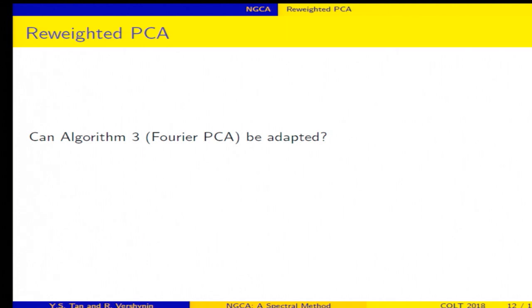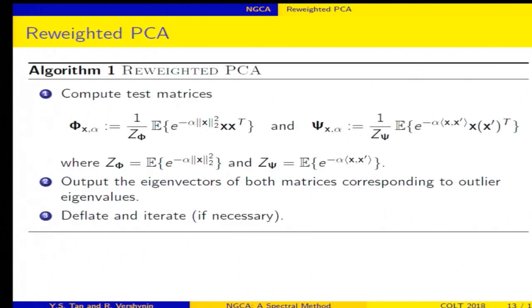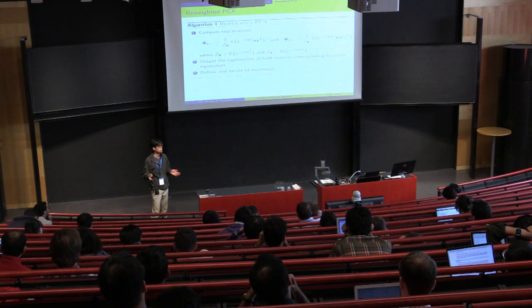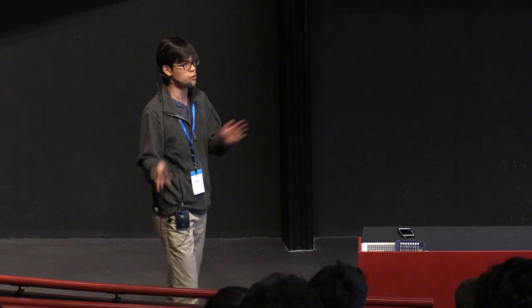We can ask the question whether the third algorithm, reweighted PCA, can be adapted. Okay, so the naive adaptation doesn't work, but we can actually change the weights to get something that does work. Alright, so here's the algorithm. Okay, so we first consider the following two test matrices. So here we have the covariance of X, except that we modulate the distribution by multiplying it by this quantity, e to the minus alpha times the norm of X squared. And then our second matrix is a bit more complicated. We take X and an independent copy X prime. We form the outer product. And again, we modulate the distribution with this quantity, e to the minus alpha X dot X prime. Okay, and we have self-normalizing quantities. So we consider these two test matrices. We form the eigenvalue decomposition. And then we output the eigenvectors that correspond to the outlier eigenvalues. So these eigenvectors are going to end up lying inside the non-Gaussian subspace. And if we have found all the directions in one step, we are happy and we're done. But if we haven't done so, we have to project onto the orthogonal complement and then iterate this algorithm.